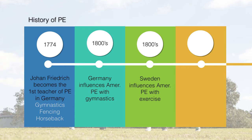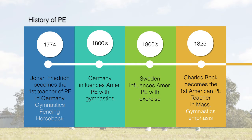Sweden's influence came from the focus of physical education for exercise purposes — just being fit, not necessarily engaging in recreational activities, but improving your own self-image and feeling good. There has always been a link between physical activity and overall health. Americans picked up on this and started to incorporate these ideas. A few years later, Charles Beck became the very first American physical education teacher, taking influences from both Germany and Sweden, with a focus on gymnastics and full body improvement.